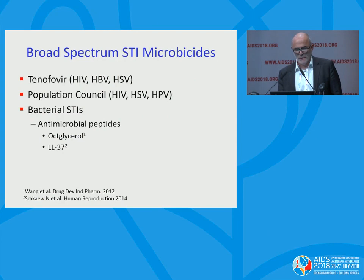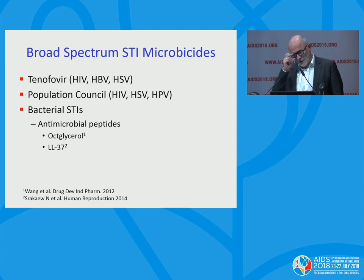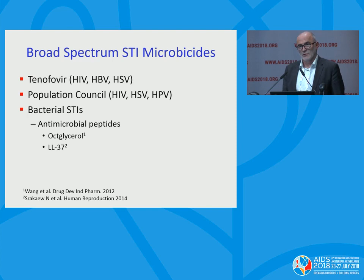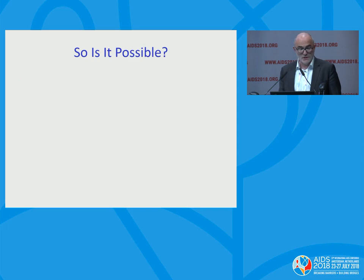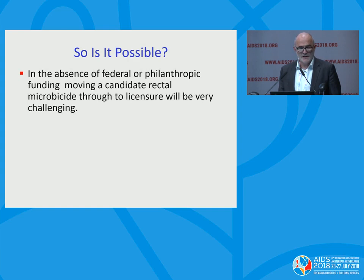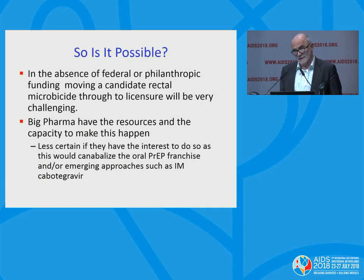Many people in the field would like to see a broad-spectrum product — probably meaning contraceptive, antibacterial, and antiviral. At this moment there's a very short list of candidates. I think we can generate a broad-spectrum antiviral microbicide — tenofovir is one example, as is the Population Council product. But when we try to protect against bacterial STIs, that's tricky. The only things with some potential are probably antimicrobial peptides, which have shown activity in animal models and in vitro against bugs such as gonorrhea. As for whether it's possible to develop a rectal microbicide — the main issue is funding. In the absence of ongoing federal funding, I would argue no. Big Pharma's focus is on oral PrEP and injectable PrEP, so it may not happen.